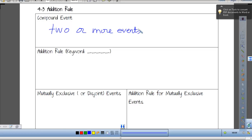First rule being the Addition rule, which has keyword OR. That's gonna be very important. When we are joining two events with keyword OR, we're gonna think about the Addition rule.